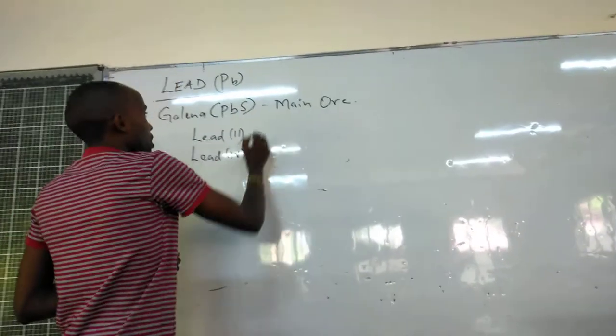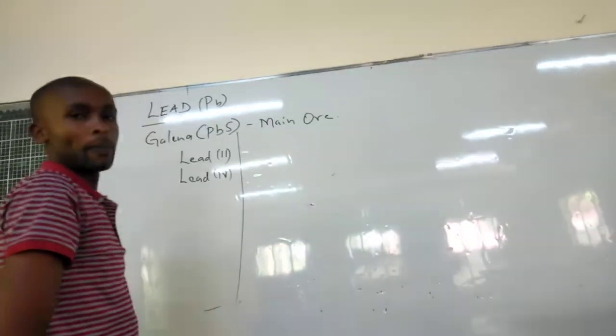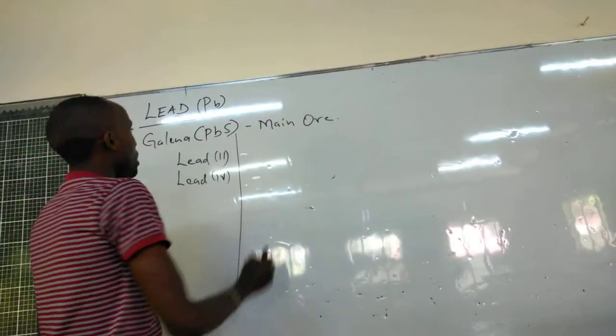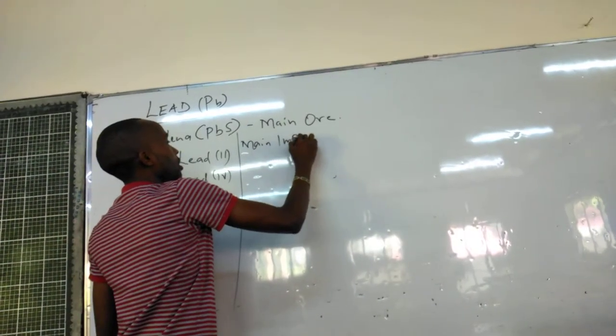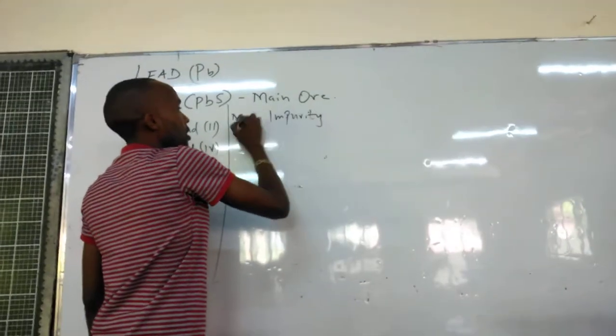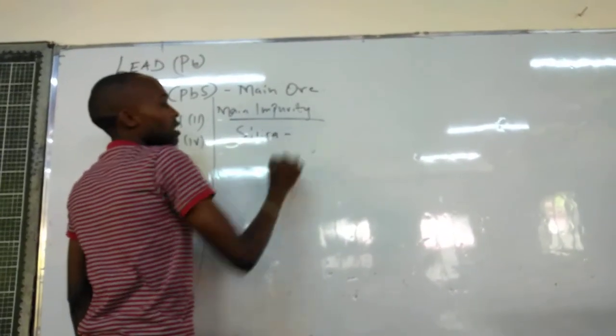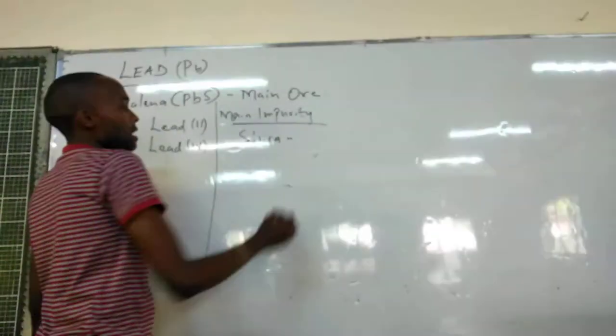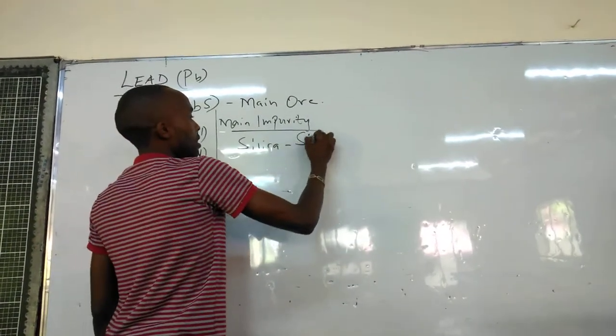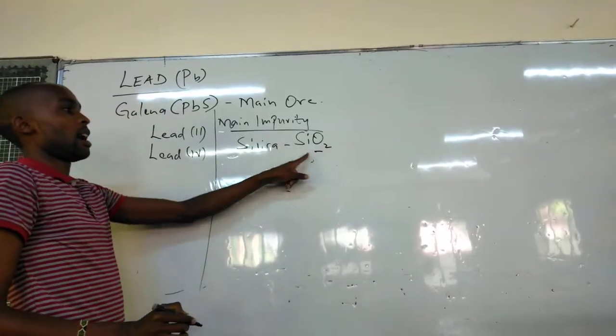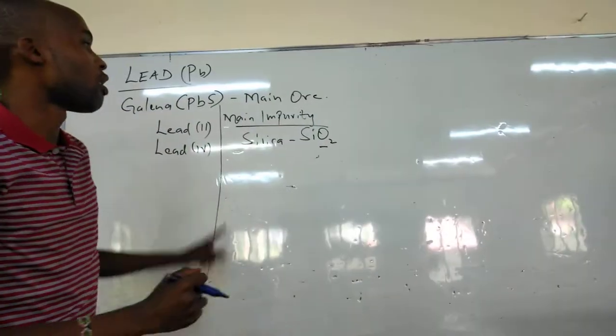Now, this is Lead. The main impurity in this ore is silica. And the chemical name for silica is silicon(IV) oxide, whose formula is SiO2.